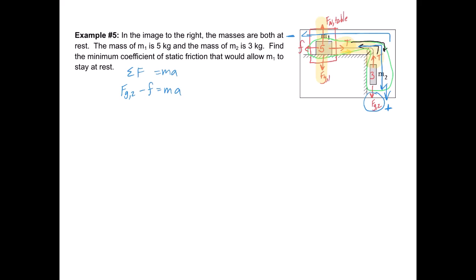Now, I can calculate the force of gravity on block number two. That's just mg. I can go the mass, which is 3, times gravity, which is 9.8. And so I go 3 times 9.8. And when I do 3 times 9.8, I get 29.4.